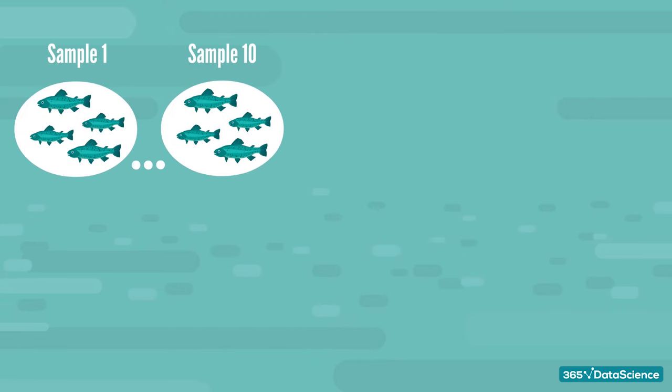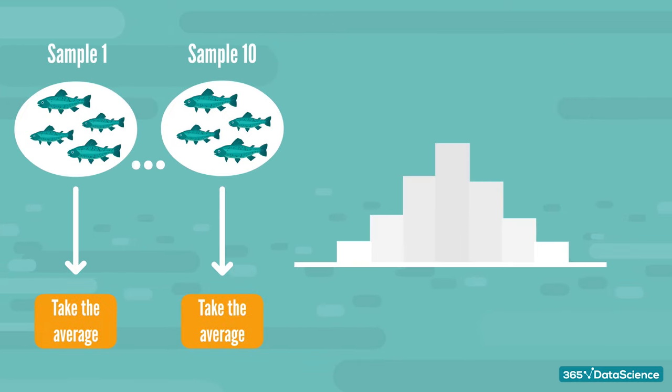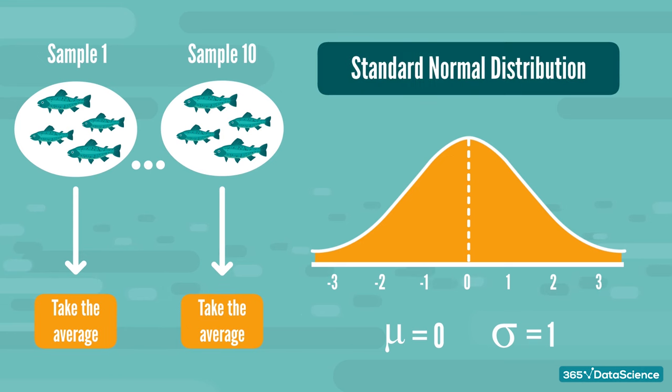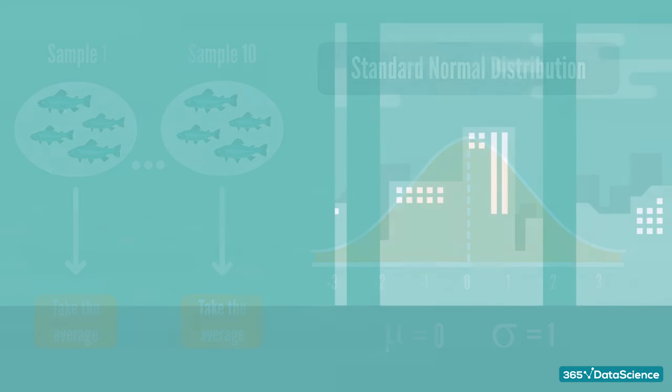Also, the sample means are normally distributed random variables, which yields that we can standardize them. More precisely, standardization in this case stands for transforming each of our variables mean to 0 and variance to 1. This way, we can easily find information in statistical tables about the area under the curve of the standard normal distribution.